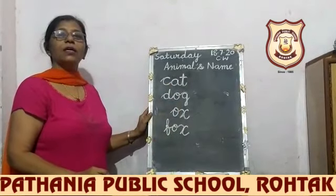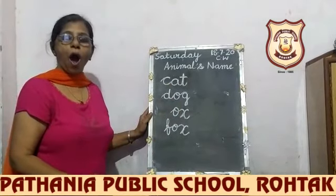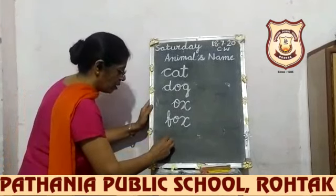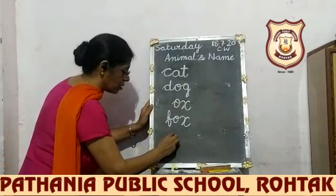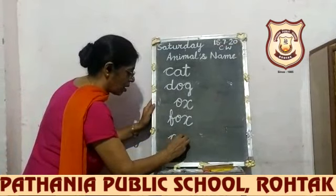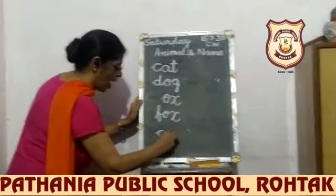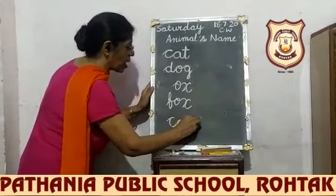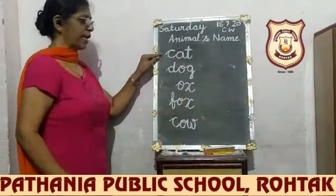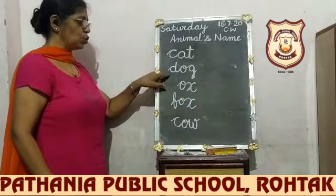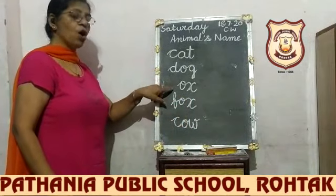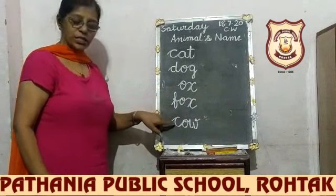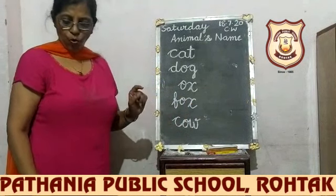Next is cow. Cow — C, O, W. Cow. So far we have: cat, dog, ox, fox, cow.